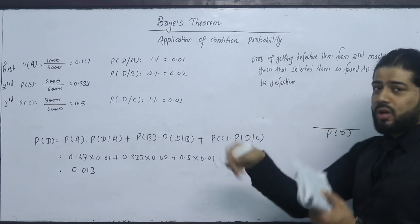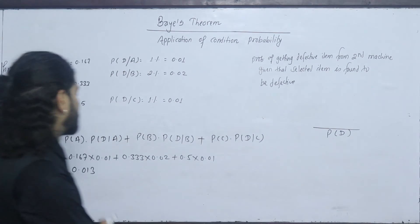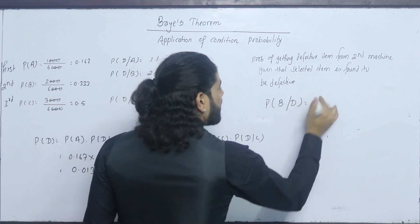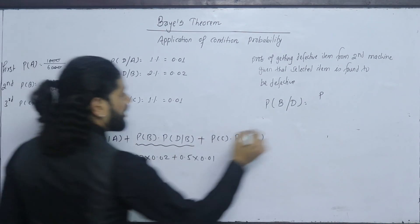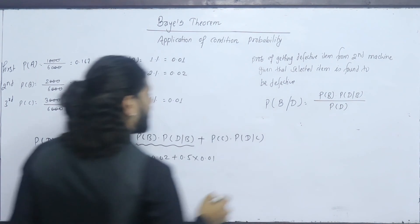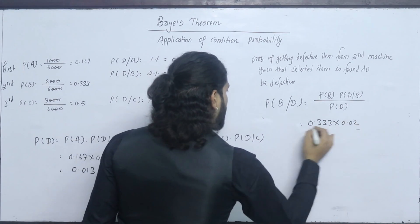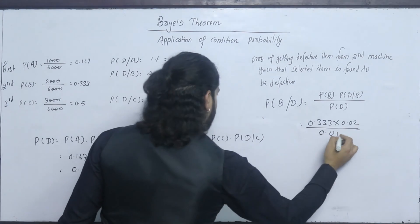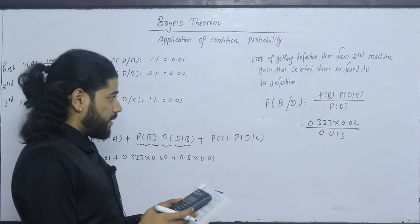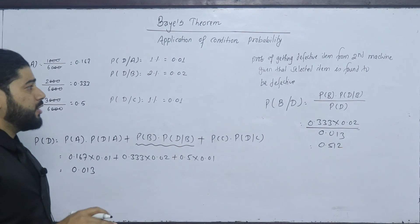Now applying Bayes' theorem, given that the item is defective, the probability it came from the second machine is 0.512.